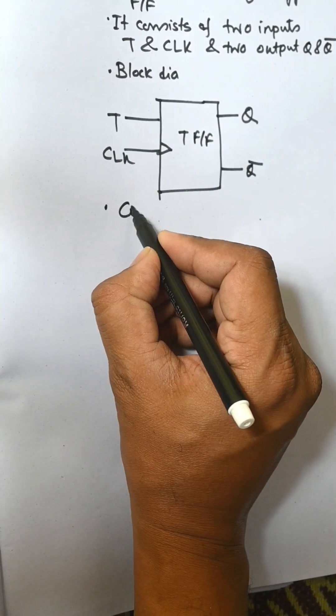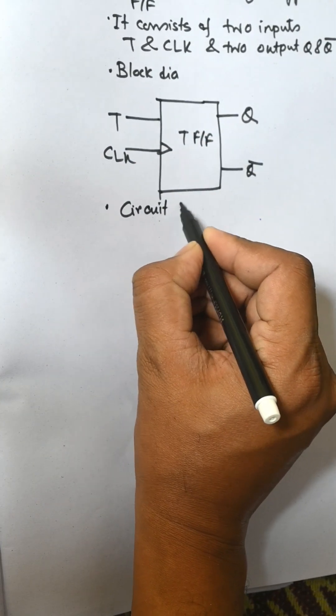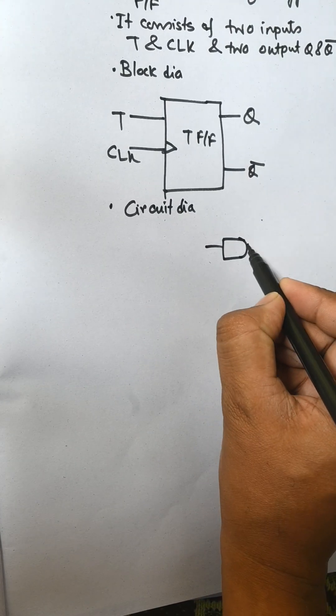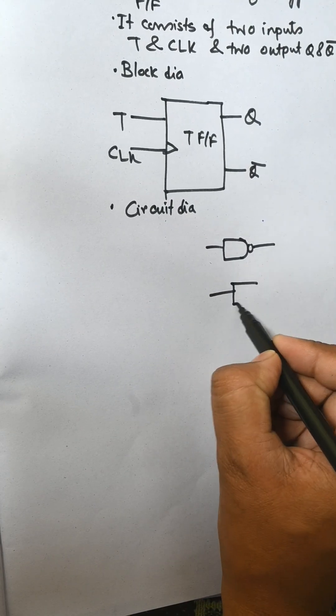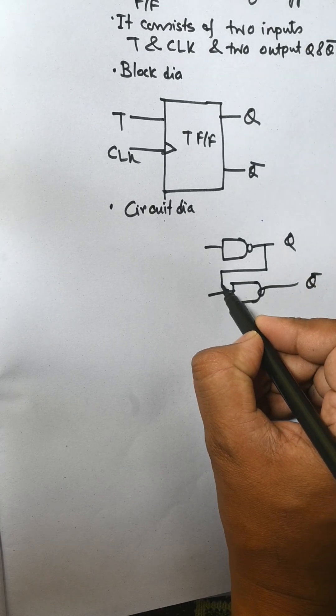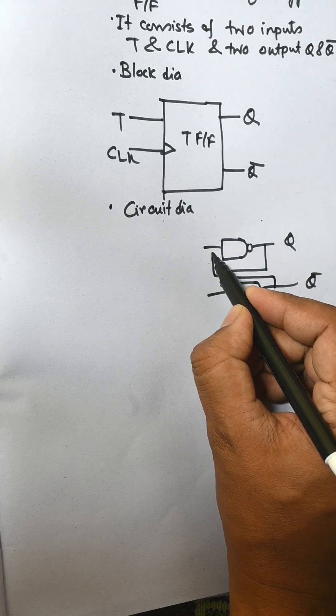Circuit diagram: start with SR latch. This means this is Q, Q̄. Q is fed back to this one and this is fed to this.